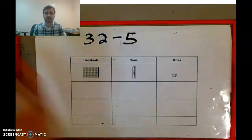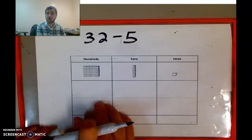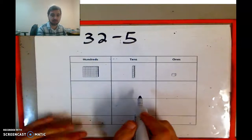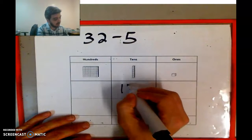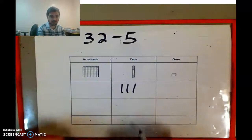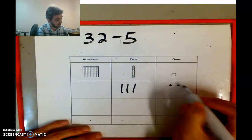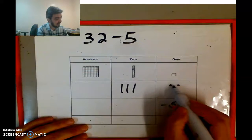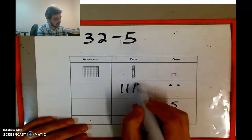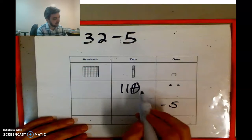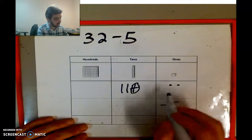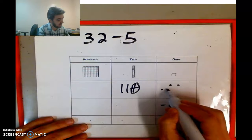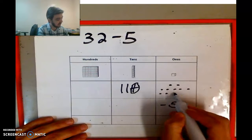So how would we solve this? Because for tomorrow when you do your independent work, this is what it's going to look like. I would just draw one, two, three — that represents 30 — and then two ones. And here I'm going to write minus 5. Again, we can't take 5 away here, so I'm going to open up one of these bags. I'm going to cross that off and I'm going to take the 10 Skittles that are in this bag and put them over here: one, two, three, four, five, six, seven, eight, nine, 10.